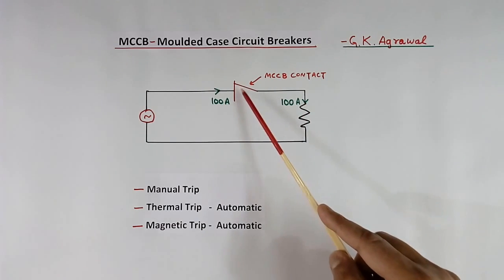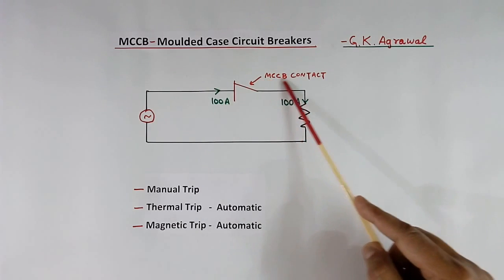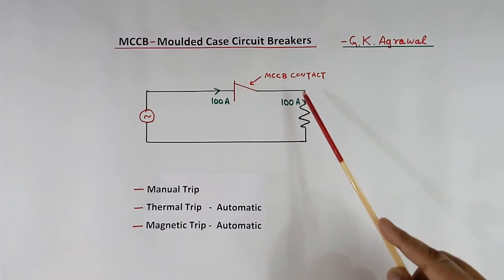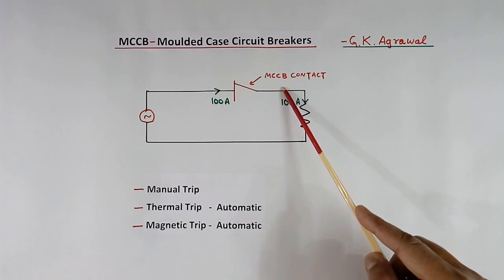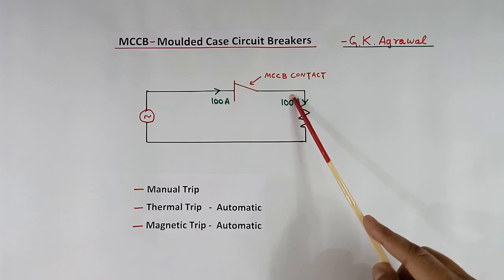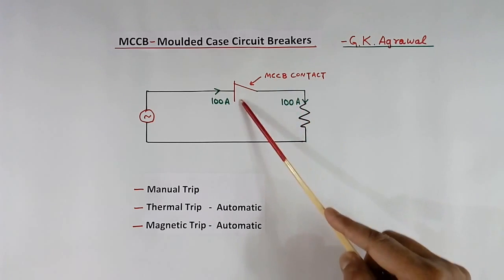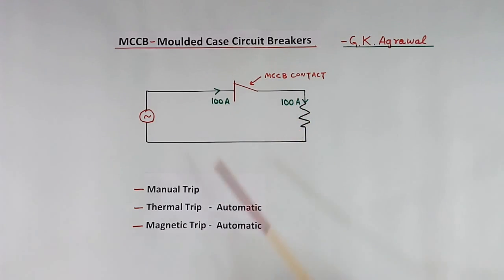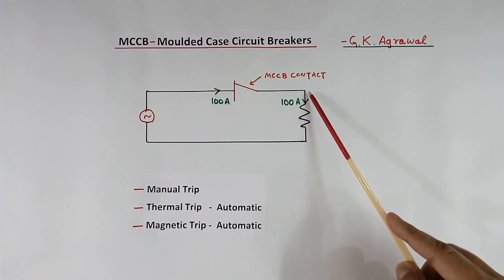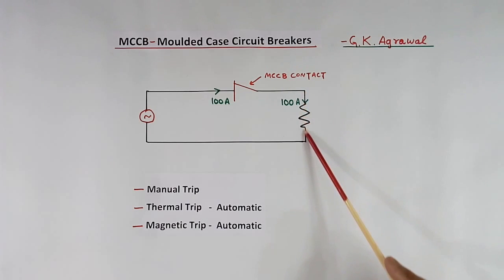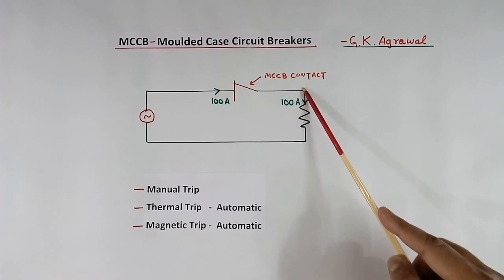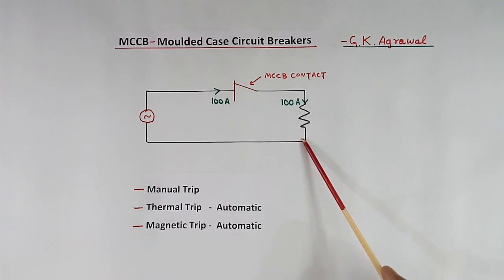This is the contact of MCCB. Whenever current becomes more, this MCCB contact will open, or we call it trip. Current can become more here because of 2 reasons.